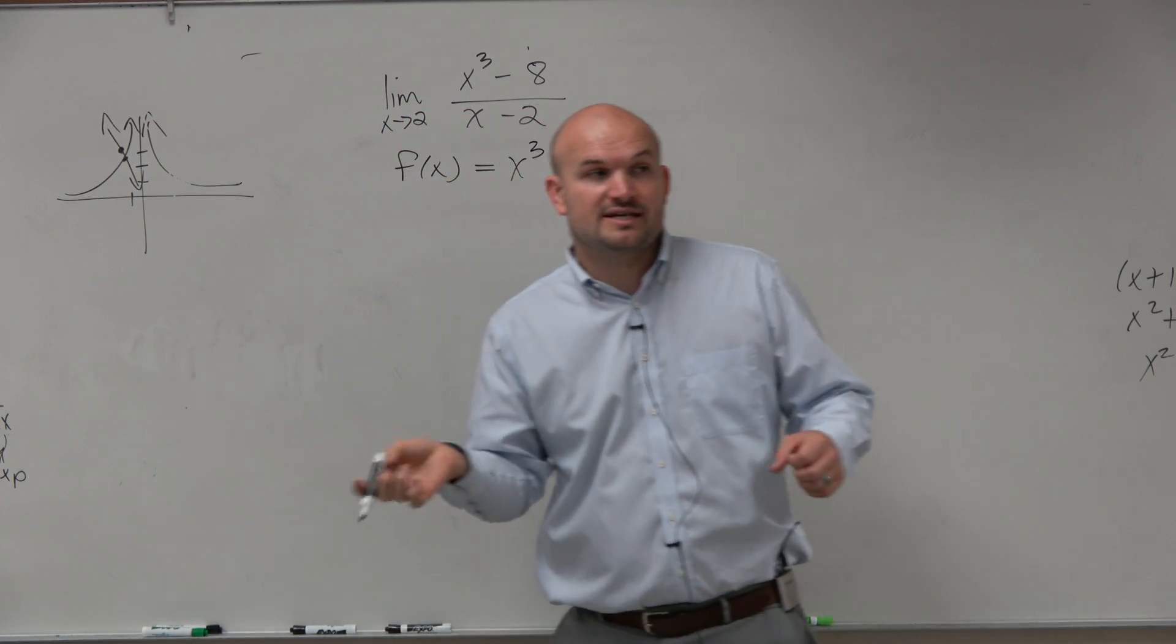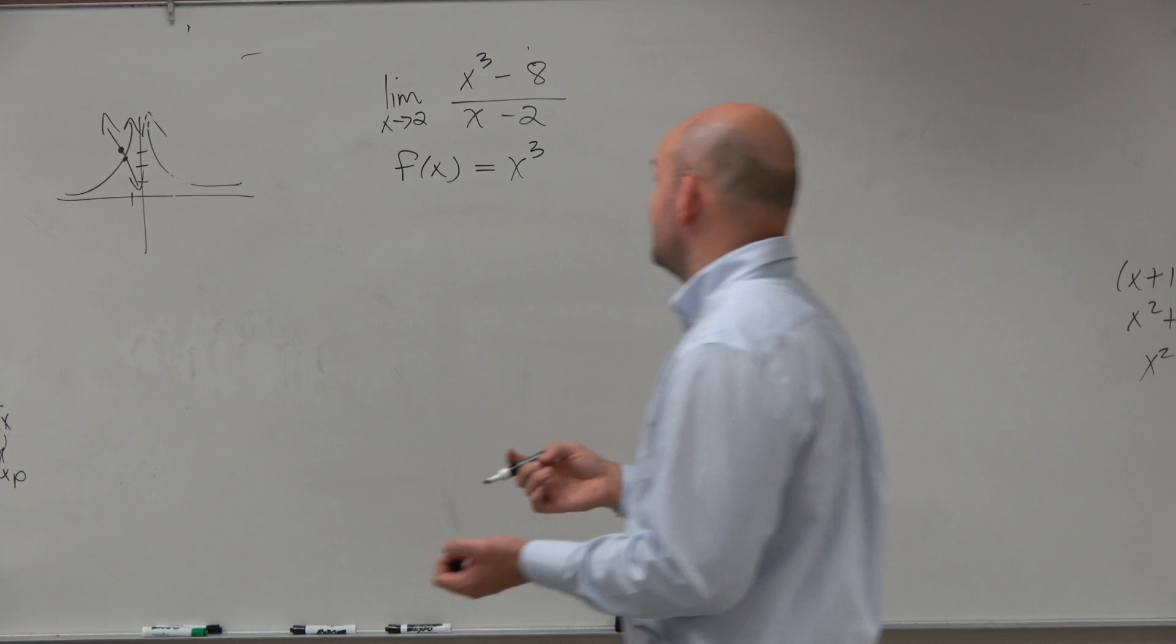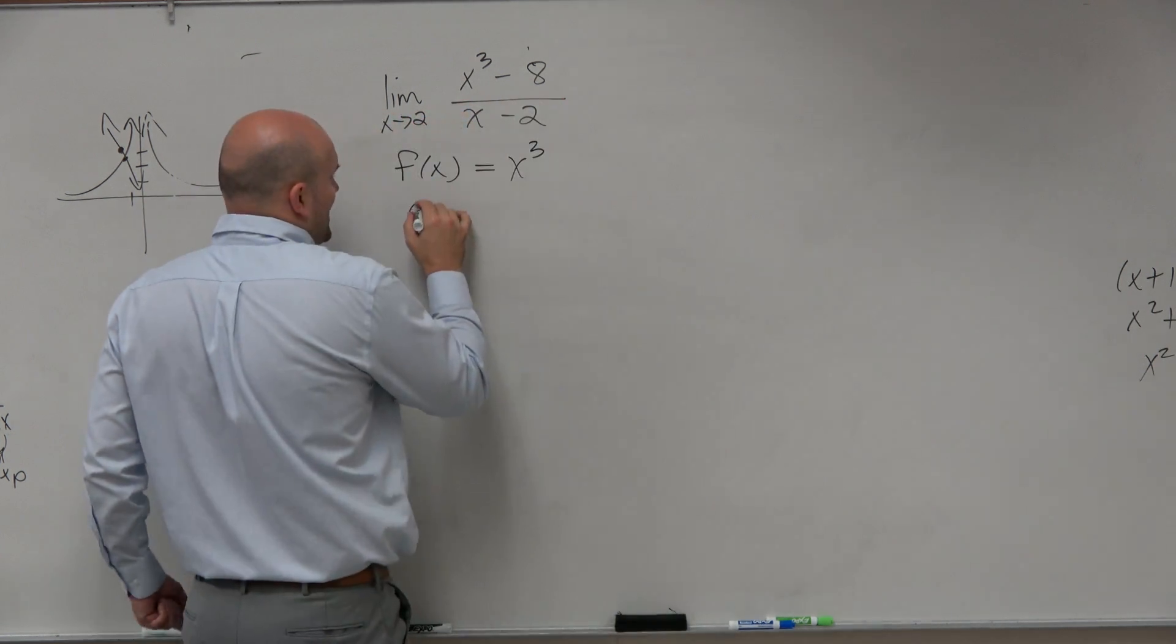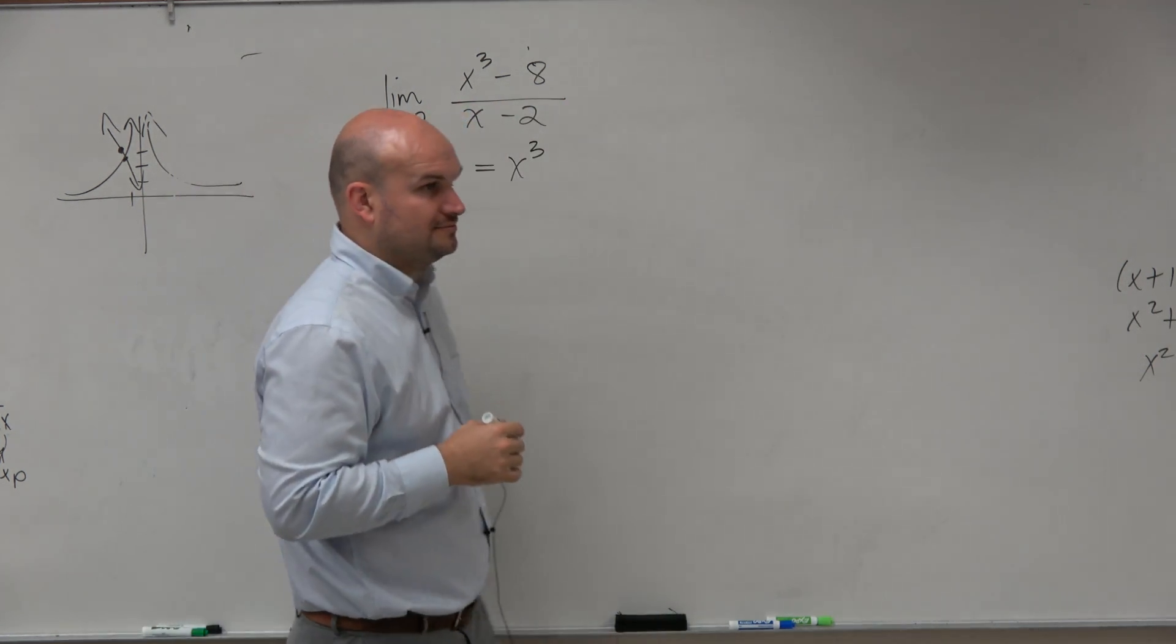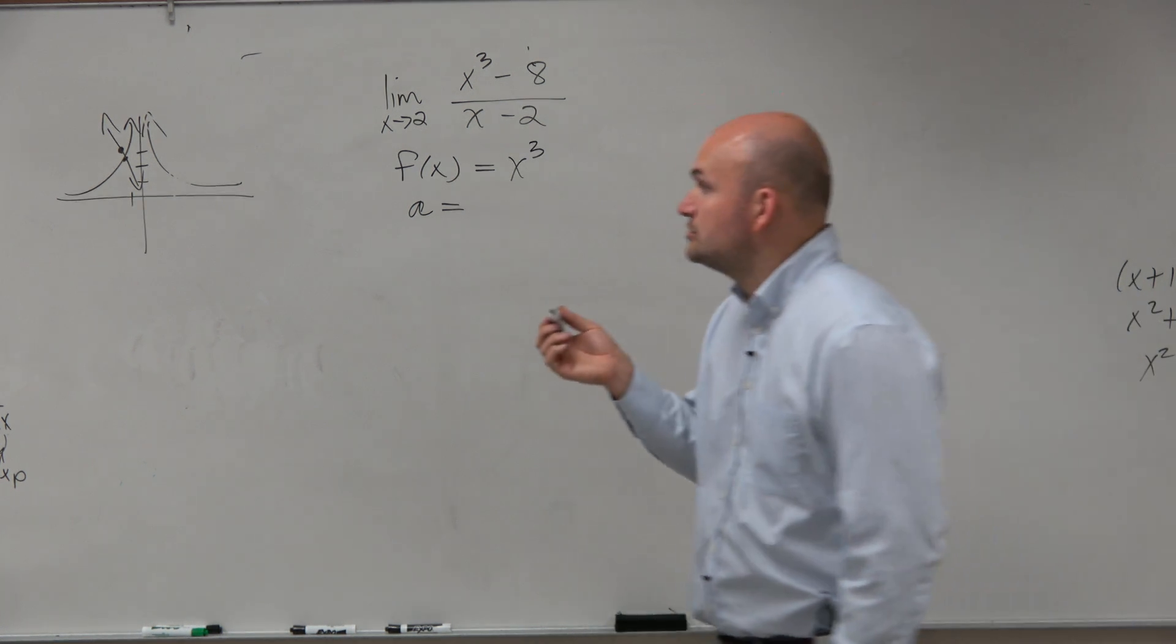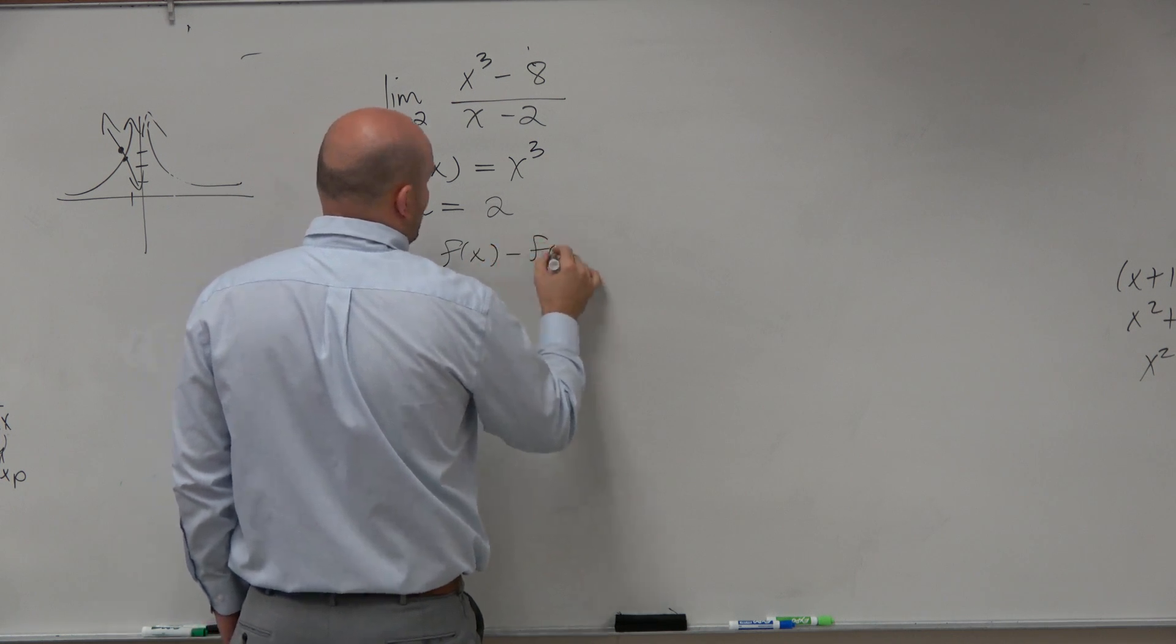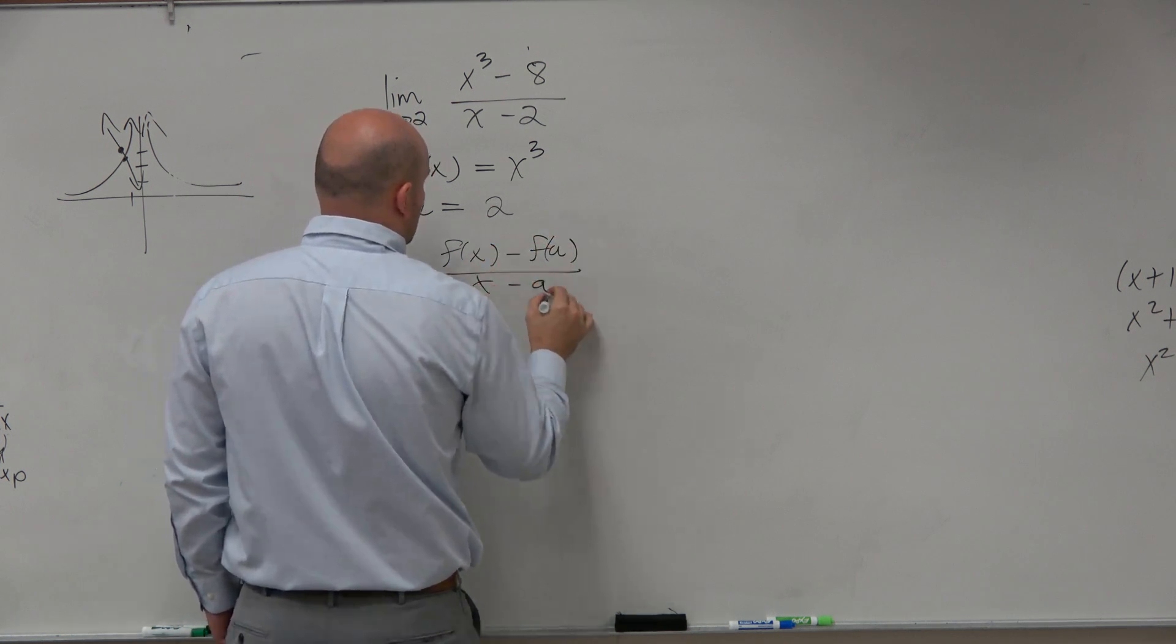Now, the point that we're going to take the derivative of is going to be at a, which is your constant. So what does my a look like in this case? 2, right? Because it's f of x minus f of a all over x minus a.